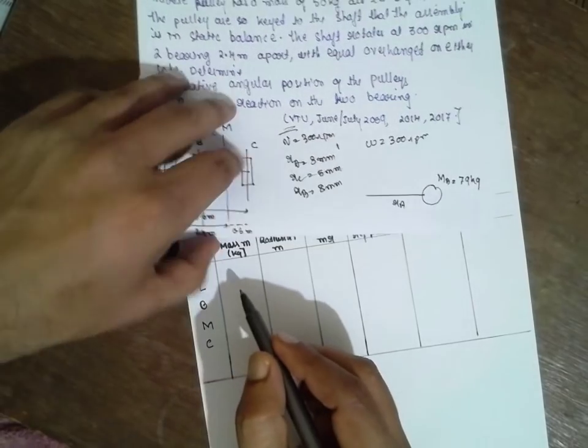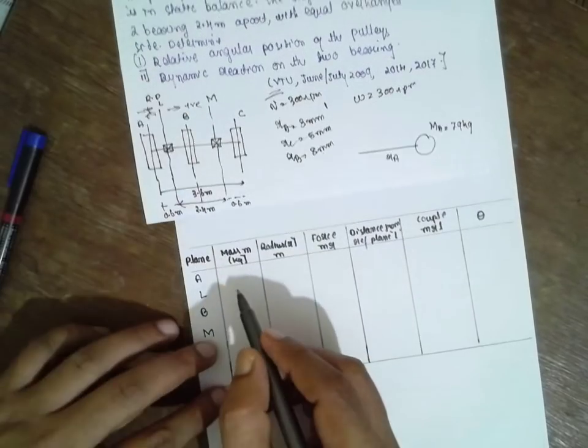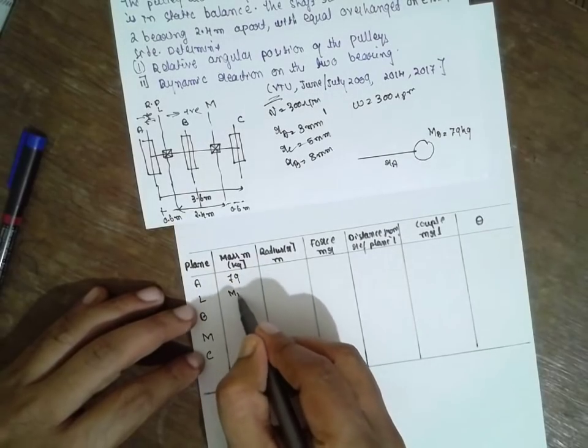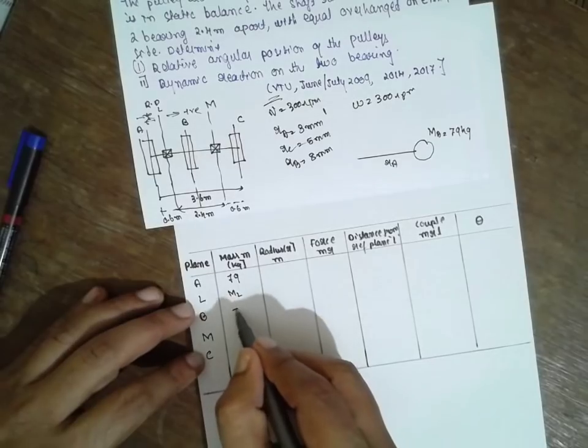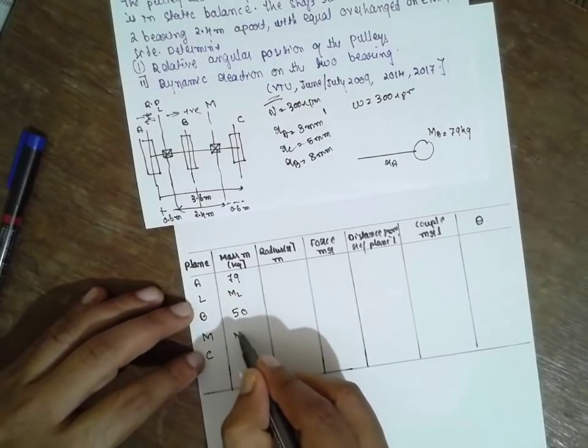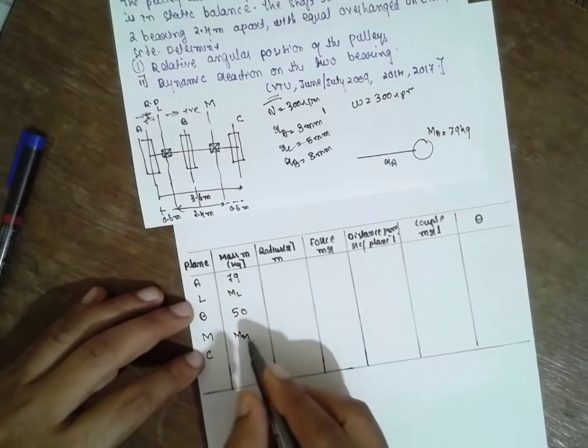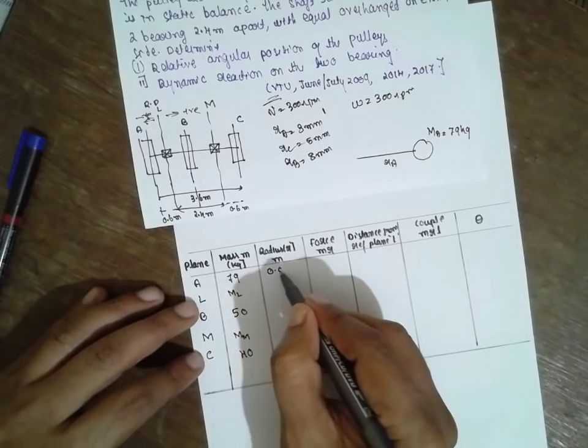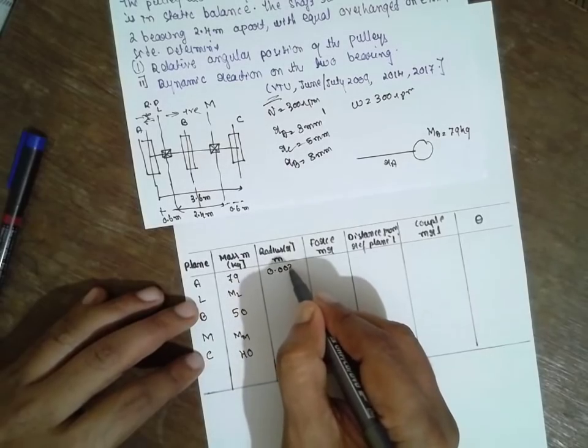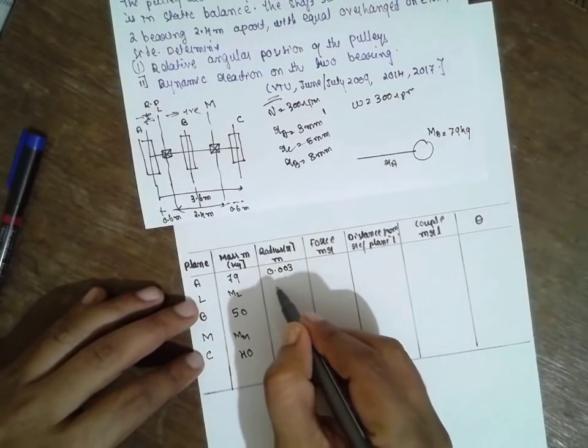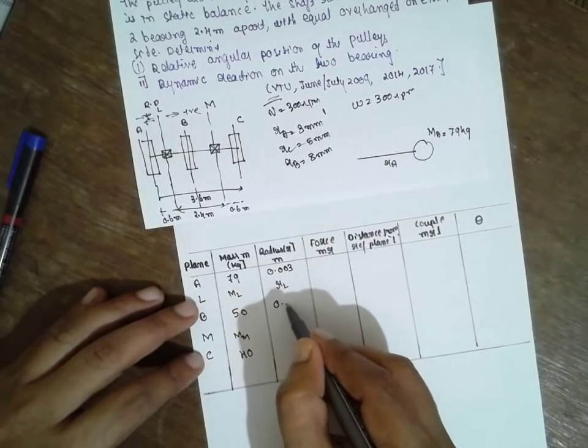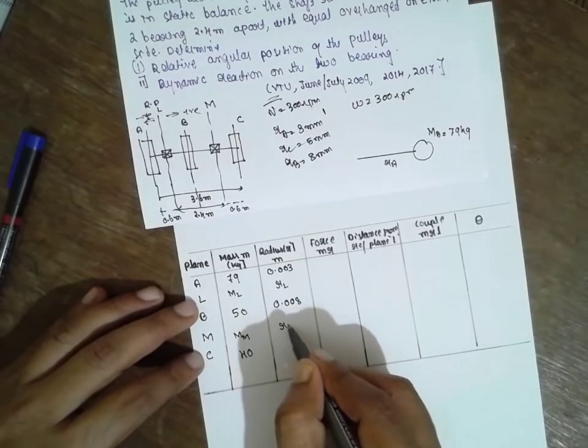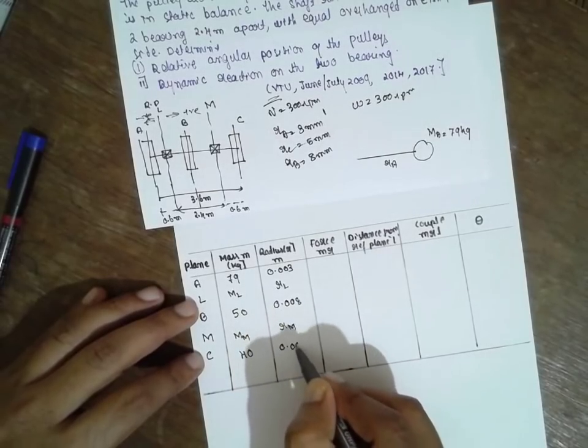Now the mass of A is 79 kg. We have to find out ML and it's 46 kg. Radius they have given in terms of meters. You have to write 0.003 for RA. RL we have to find out. RB is 0.008. RM we have to find out. And RC is 0.005.